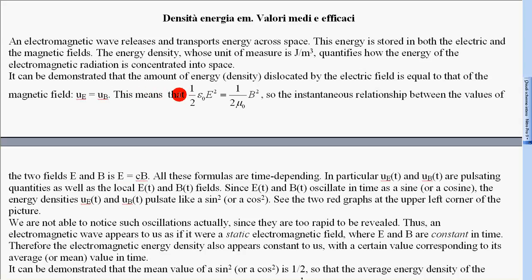This means that the relationship involves E² and B² divided by μ₀, so the instantaneous relationship between the values of the two fields E and B is E equal to cB.